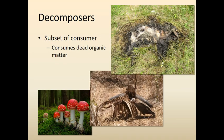Then you get to a point where things die and you get decomposers. They're really just a subset of consumers, but they're consuming dead organic matter. Decomposers eat dead stuff and put those nutrients back into the soil to be used by producers again. So if this is a dead deer — it looks gross right now, but within a year or two there'll be a verdant patch of plants growing there because all those nutrients were released back into the soil.